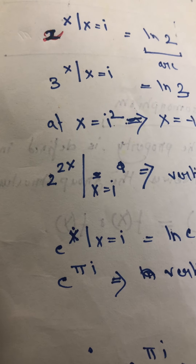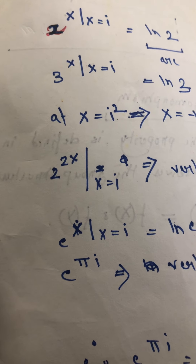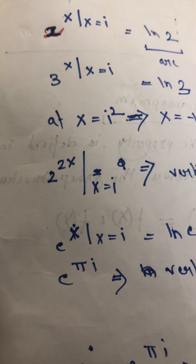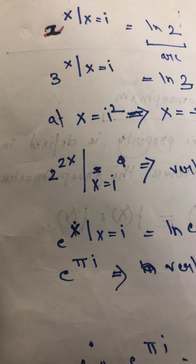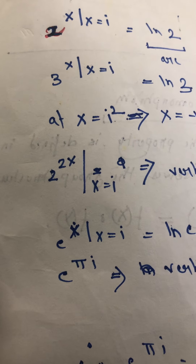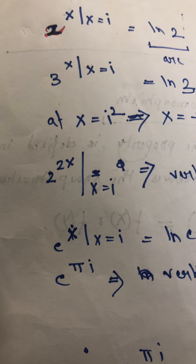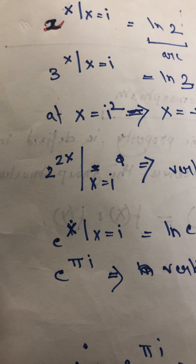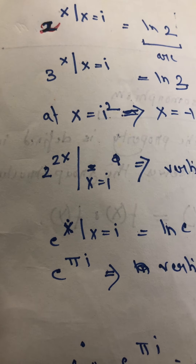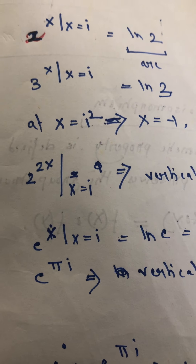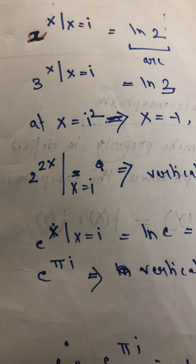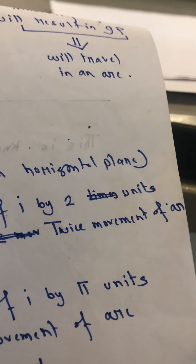Next is 2 to the power 2x. That means now for 2 to the power 2x, again I am assuming the value of x to be pi. That means 2i — in this case, that means I have travelled from i to 2i. That means there is a vertical movement of i by 2 units.